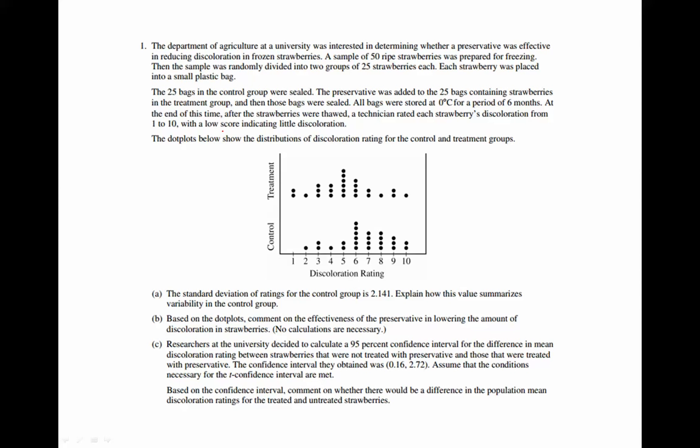This first question says the Department of Agriculture at a university was interested in determining whether a preservative was effective in reducing discoloration in frozen strawberries. A sample of 50 ripe strawberries was prepared for freezing, then randomly divided into two groups of 25 strawberries each. Each strawberry was placed into a small plastic bag. The 25 bags in the control group were sealed. The preservative was added to the 25 bags containing strawberries in the treatment group and then those bags were sealed. All bags were stored at 0 degrees Celsius for a period of six months. At the end of this time, after the strawberries were thawed, a technician rated each strawberry's discoloration from 1 to 10 with a low score indicating little discoloration. The dot plots below show the distributions of discoloration rating for the control and treatment groups.